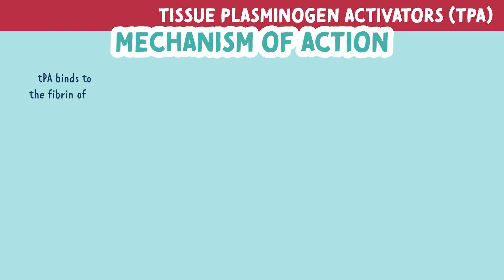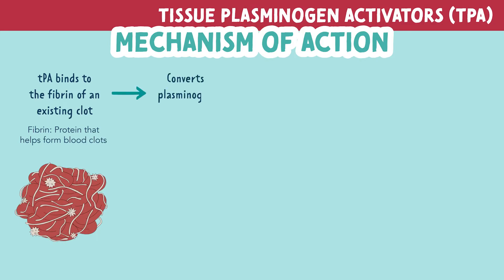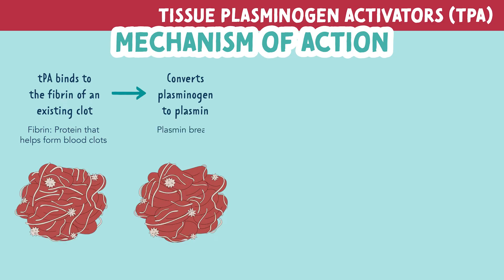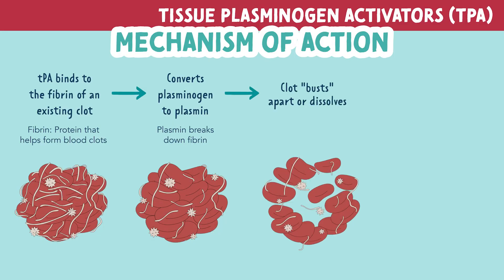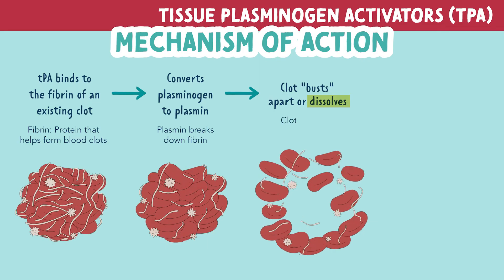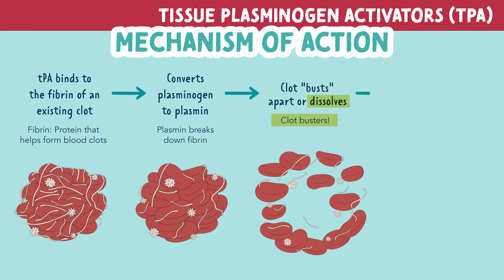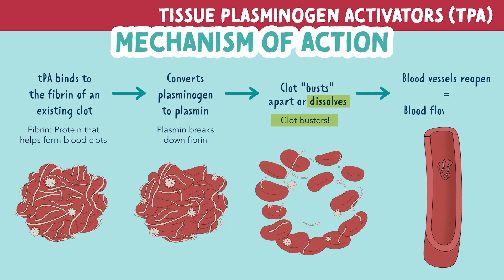TPA binds to the fibrin of an existing clot. Fibrin is a protein that helps form blood clots. TPA then converts plasminogen to plasmin, and plasmin is what helps break down fibrin. This causes the clot to bust apart or dissolve — which is why these medications are commonly called clot busters. Once the clot is no longer obstructing blood flow, the blood vessels reopen and blood flow improves.